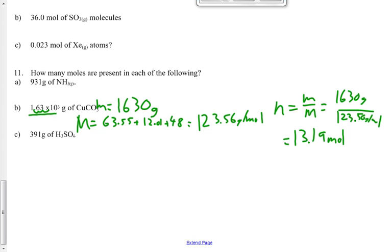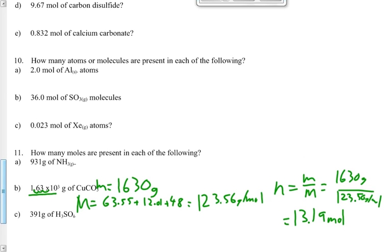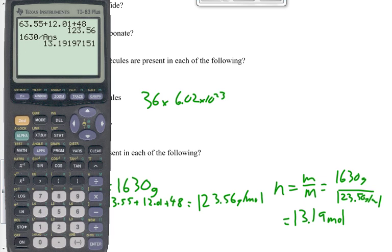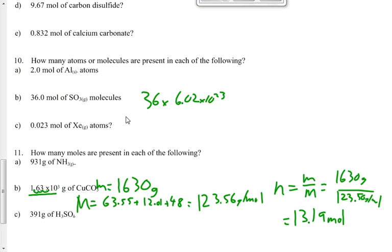Any other ones there, guys, you want to go over? 10B. How many atoms or molecules are present in each of the following? If we're going to get molecules, then we have to first have the number of moles. Now, if I've got 36 moles of this stuff, what do I need to multiply 36 by to figure out the number of molecules? 6.02 times 10 to the 23. So 36 times 6.02 times 10 to the 23. I should get 2.17 times 10 to the 25.